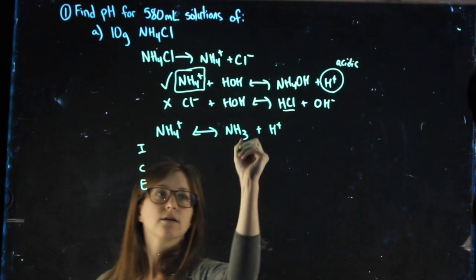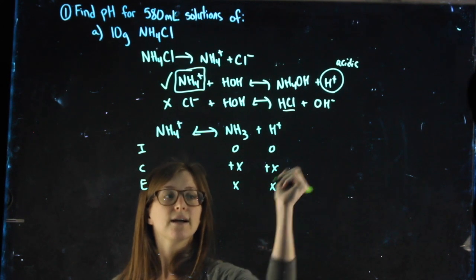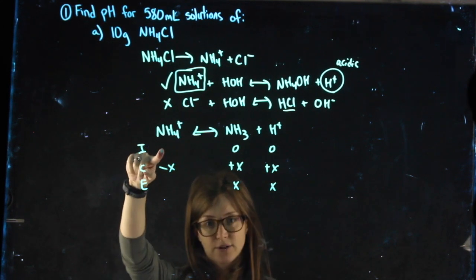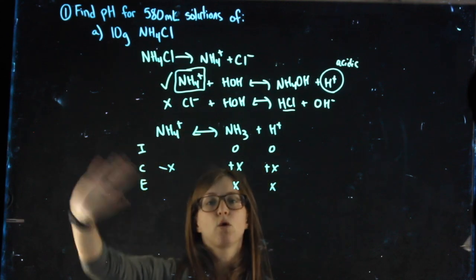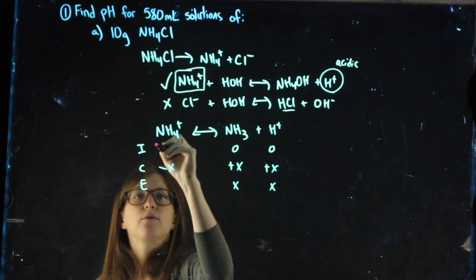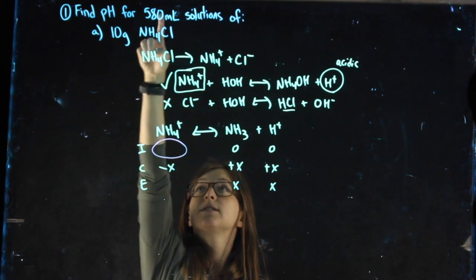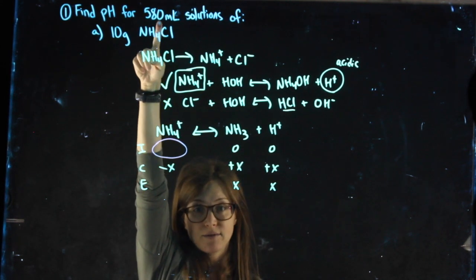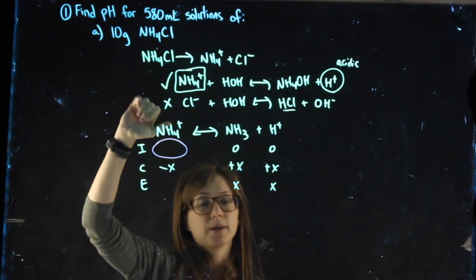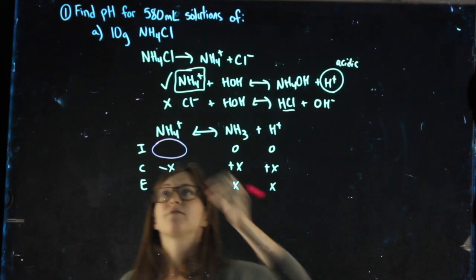ICE chart: zero plus x, x, zero plus x, x. Minus x — but I need a value for the NH4+ molarity. This whole chart is in molarity. So to find what value goes here, I look back at the question: I'm given grams and I'm given volume. Grams can get me moles, and then volume can get me molarity — but it'll be of the NH4Cl, because that's what I have the grams of.